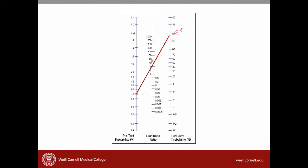What if we had a patient who was much younger and didn't have convincing symptoms? We would have a lower suspicion of disease, say about 10%. If we calculate the post-test probability again using the likelihood ratio that we calculated before, we can see that the post-test probability is much lower — about 50% — which means that even after the test, the patient only has a 50-50 chance of having the disease. This demonstrates how important the pretest probability is to help us decide whether a patient has the disease after we get the test result.